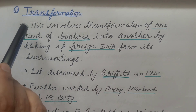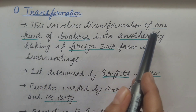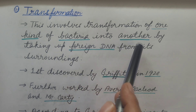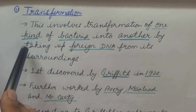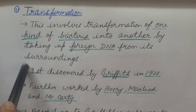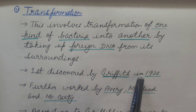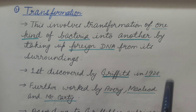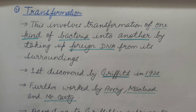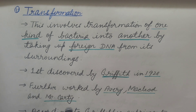First is transformation. This involves transformation of one kind of bacteria into another by taking up foreign DNA from its surroundings. It was first discovered by Griffith in 1928. Further work was done by Avery, MacLeod, and McCarty to show what is the transforming material in bacteria.